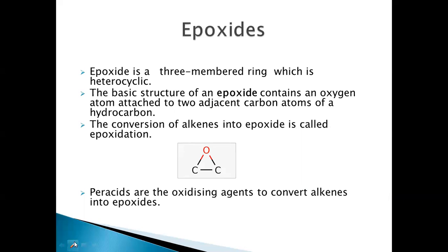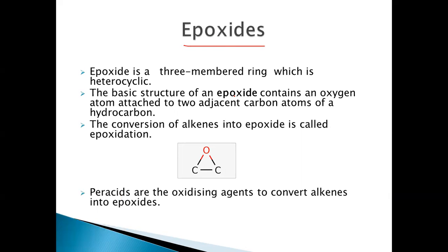Before going to the epoxidation of alkenes, let's see what epoxides are in detail. An epoxide is a three-membered cyclic ring, which is heterocyclic because carbon and oxygen — different atoms — are present in the ring. The process of conversion of alkenes to epoxides is called epoxidation.